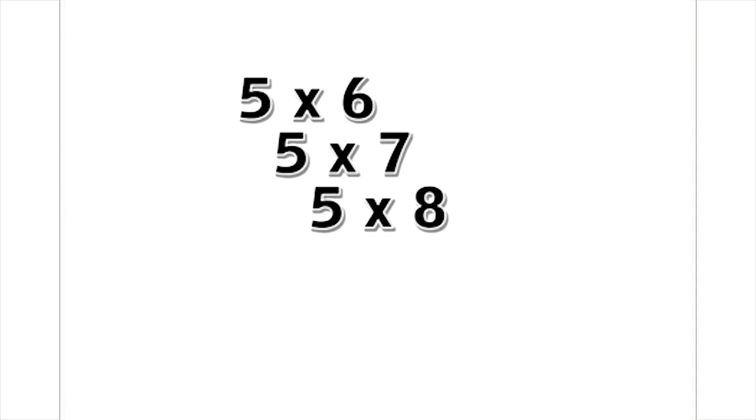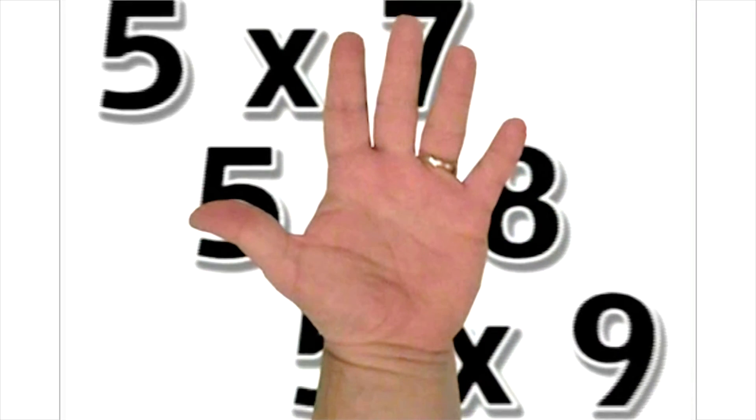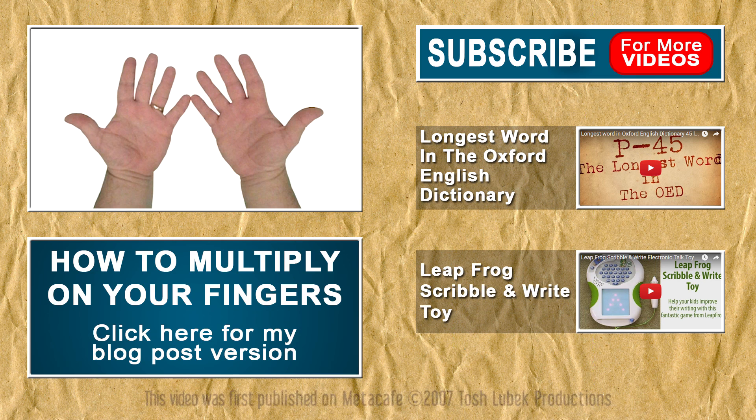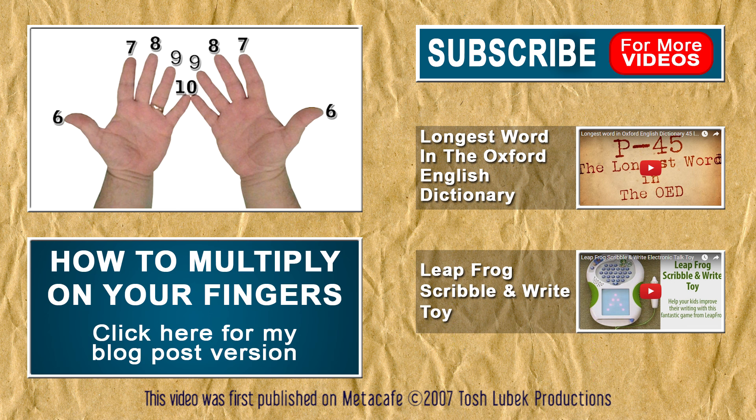You can actually use the same technique to multiply by 5, but you don't put any fingers down on the hand representing 5. I hope you found this interesting. Thanks for watching and please check out my other videos.